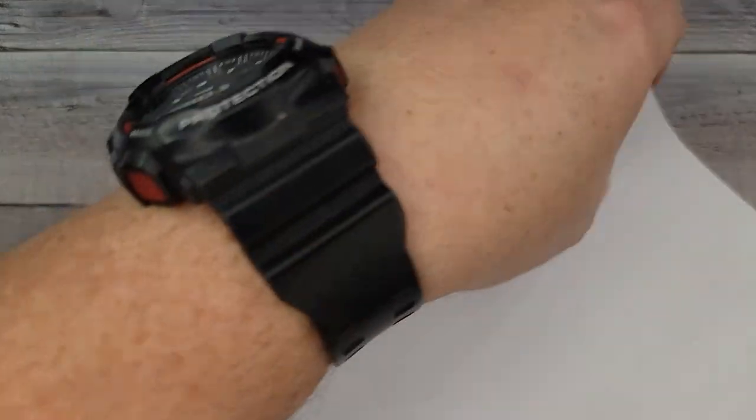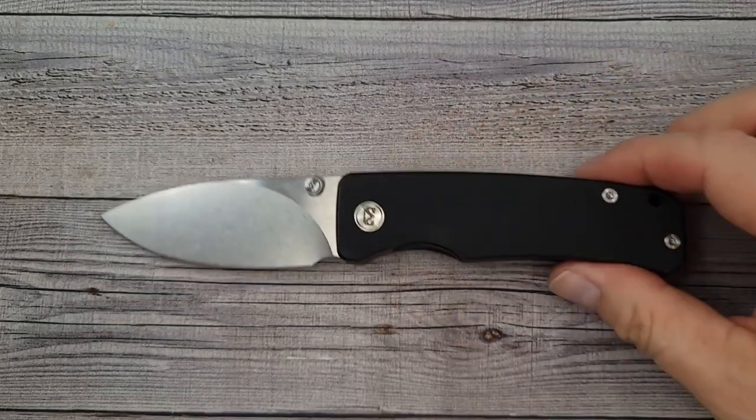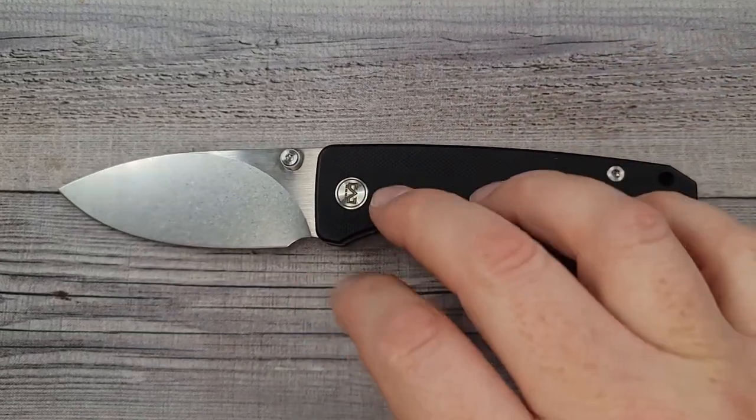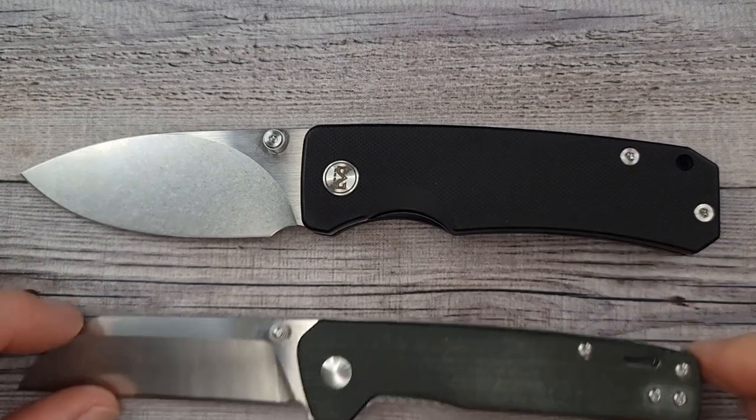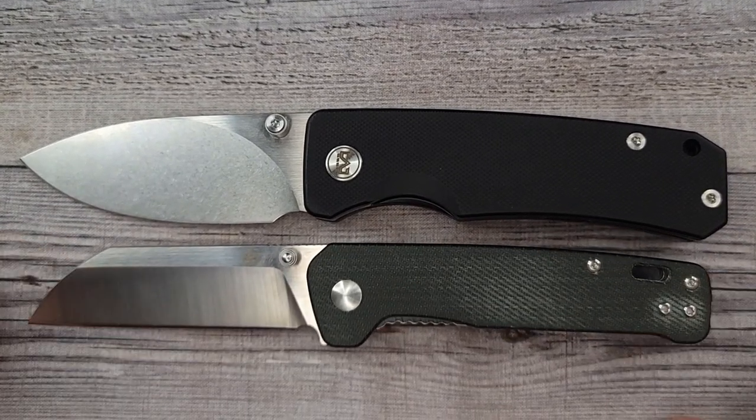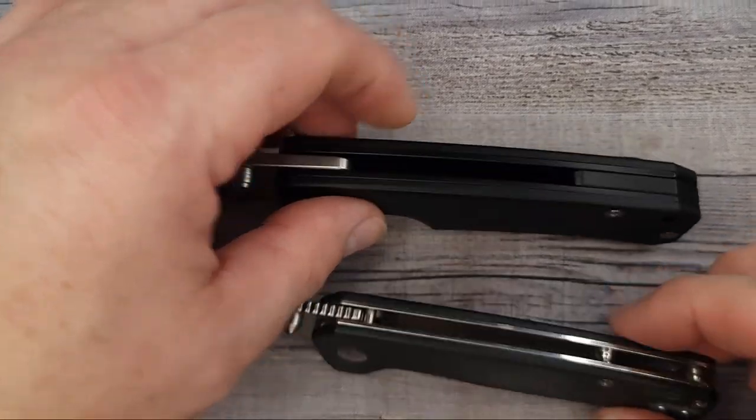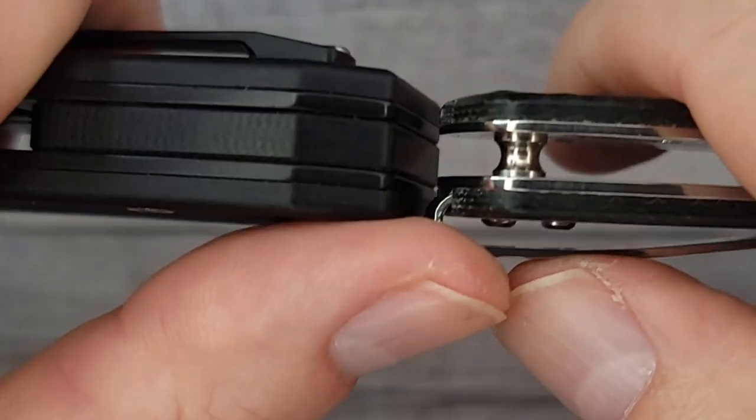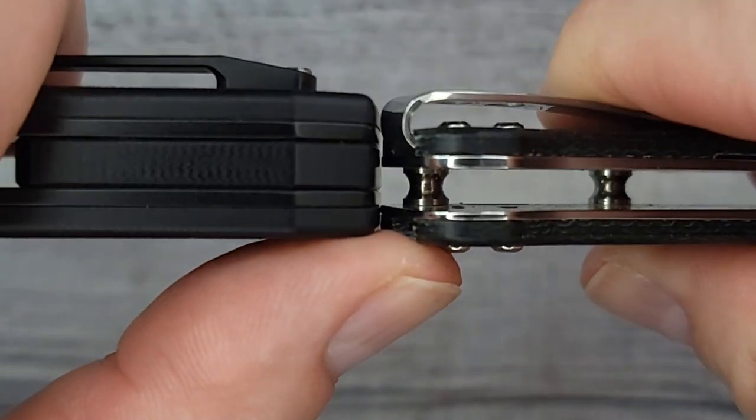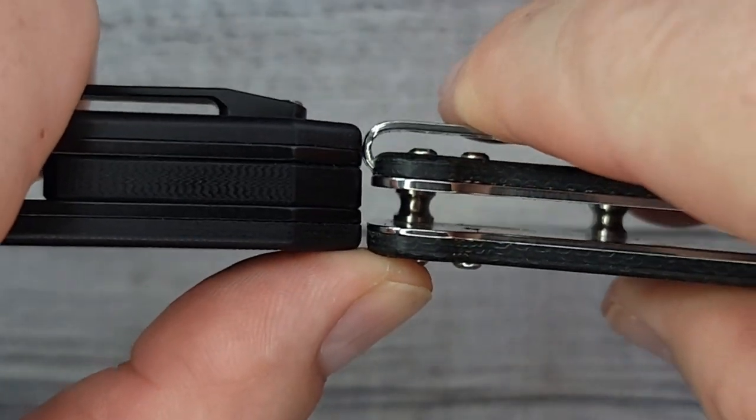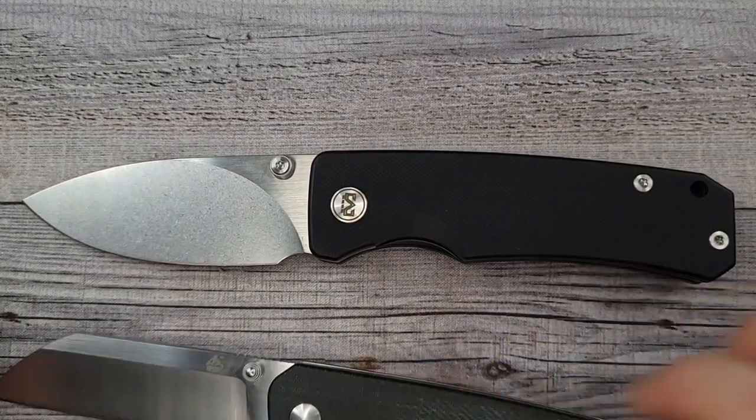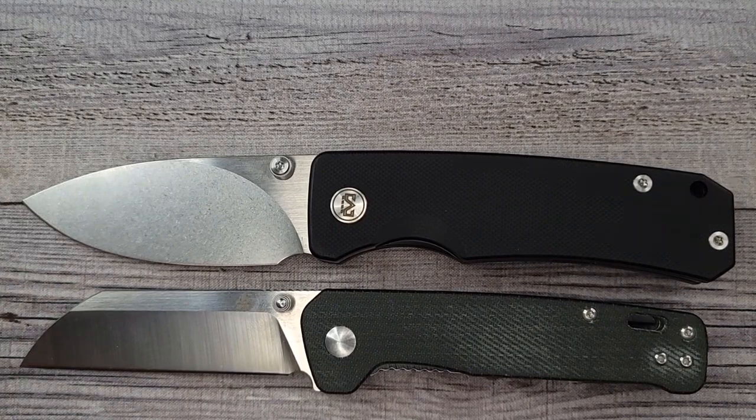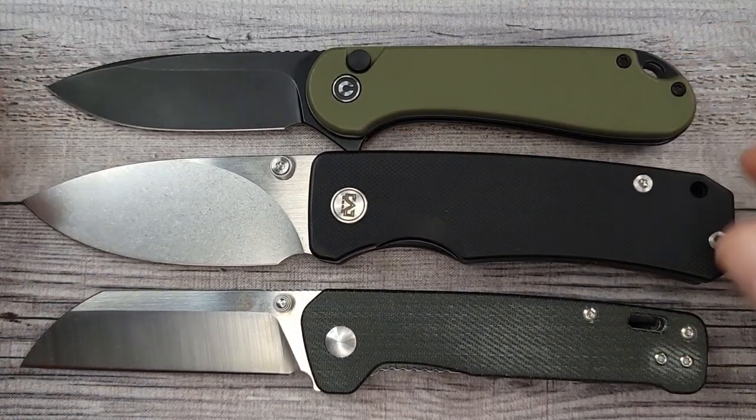I have a couple knives here you want to see next to this knife so you really get a good idea if you're deciding whether to get this one or not. Here is the QSP Penguin - look at this. You all know the Penguin and how thick or not the Penguin is. Let me show you - look at that, even counting the clip it's as thick as the Penguin plus the clip on the other side.